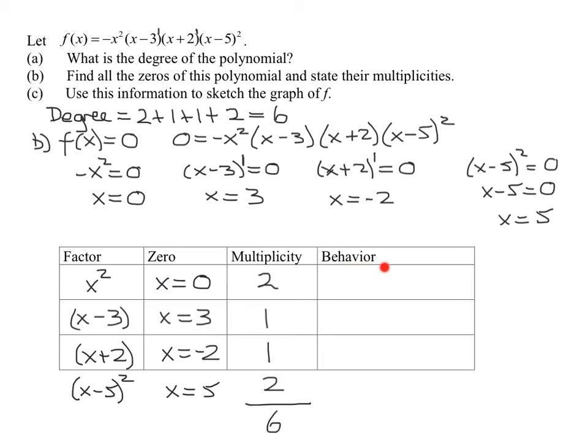But I also want to look at the behavior at each zero, or where the graph crosses the x-axis. Now hopefully you remember if the multiplicity is even, then the graph will touch the x-axis and it will turn around. So it's going to touch and turn around at x equals 0 and also going to touch and turn around at x equals 5.